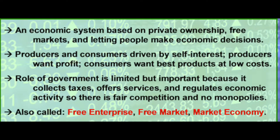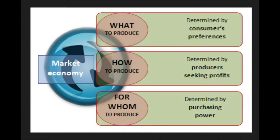Laws that protect private property, competitive markets, transparency, and accurate information flow within markets all ensure that no one group usurps our democracy by obtaining too much economic power or by destroying the mechanisms that guarantee a free market economy. In a free market economy, what to produce is determined by consumers' preferences, how to produce it is determined by producers seeking profits, and for whom to produce is determined by the purchasing power of individuals.